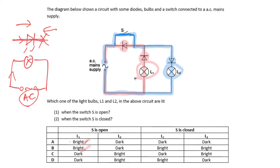When the current flows in the clockwise direction and tries to flow through the other branch, that diode is reverse biased — resistance is very high — so no current flows through that branch and L1 will not light up, it will be dark. We have now established that L2 will light up when S is closed.